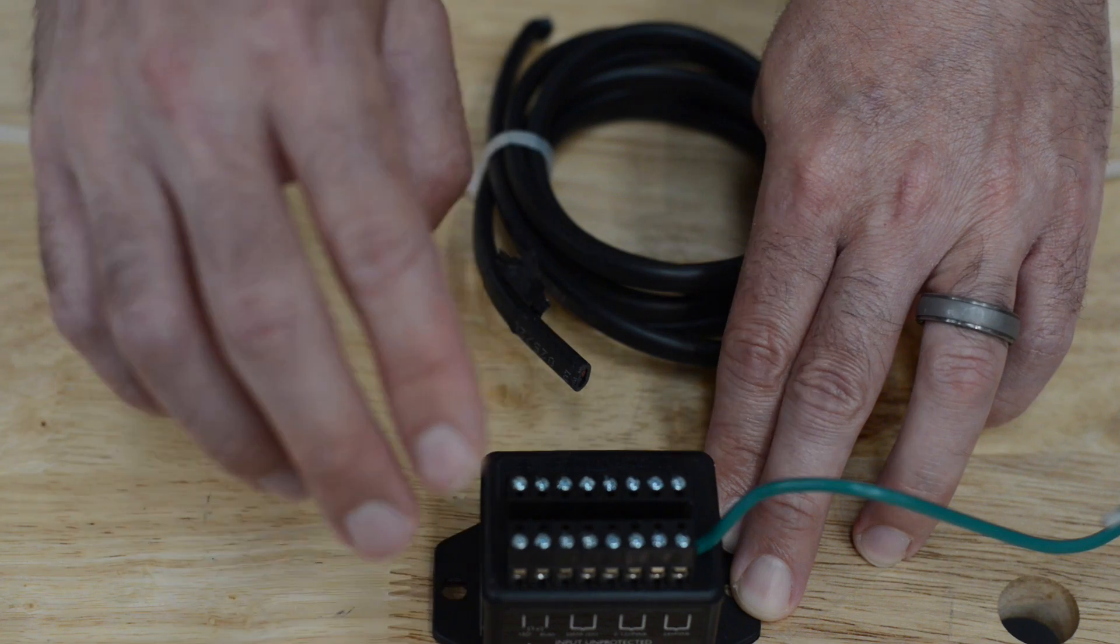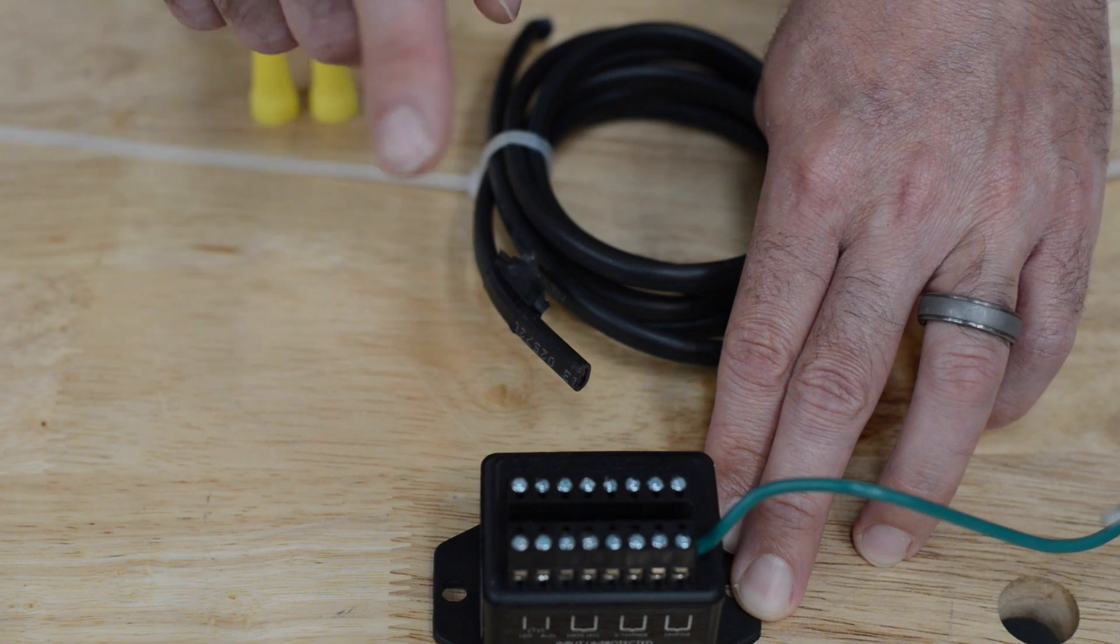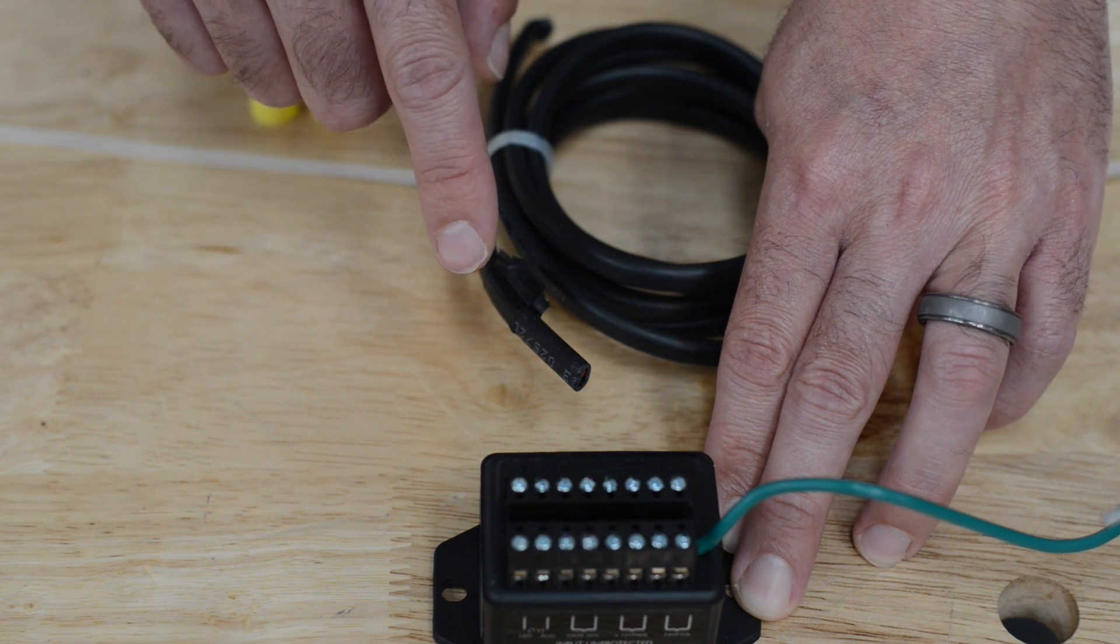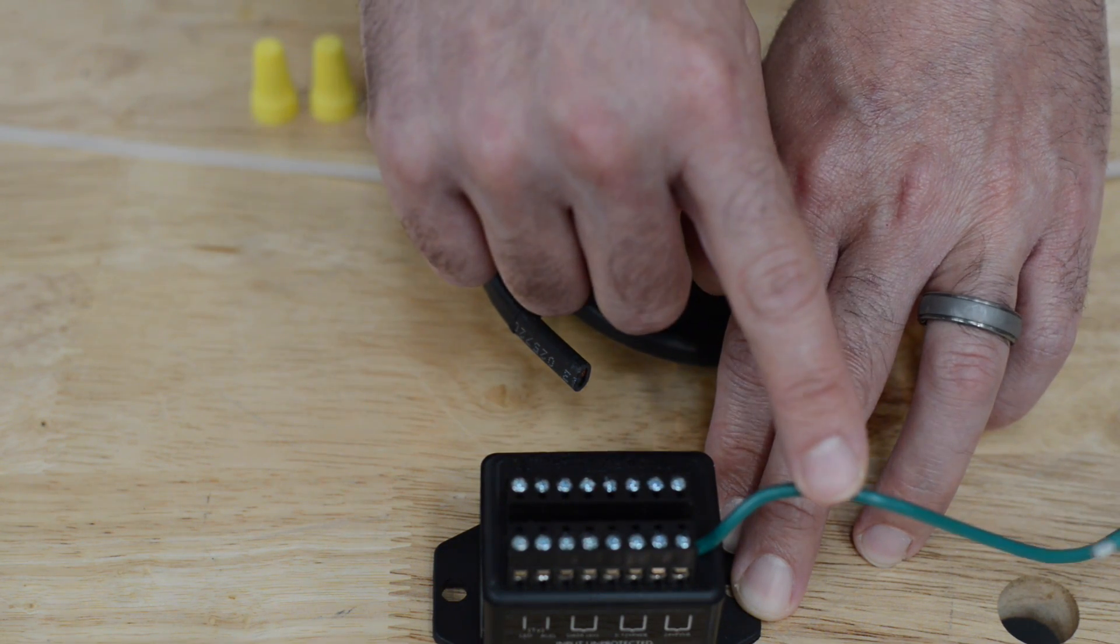First, the wire coming off the surge suppressor that leads to your equipment must be greater than three feet in length and also must be longer than the lead that goes to your grounding rod.